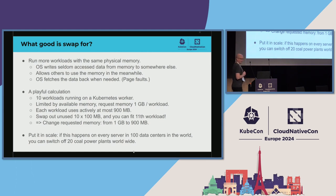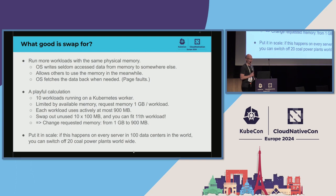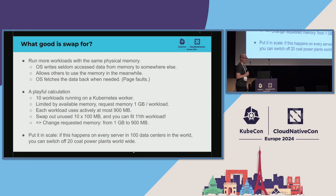A little playful calculation: if you have ten workloads running in your Kubernetes cluster, each requesting one gigabyte of memory but actively using only 900 megabytes, then if you swap out the idle 100 megabytes per workload you could fit an 11th workload on that node. That doesn't sound like much, but implemented across 100 data centers in every server, you could immediately switch off around 20 coal power plants worldwide.